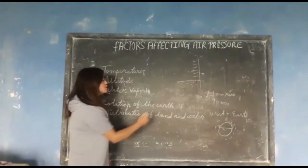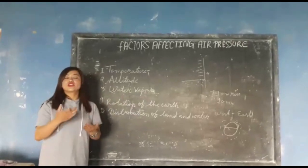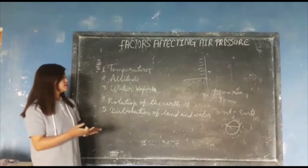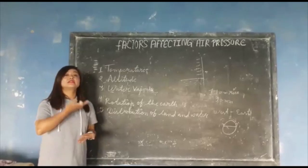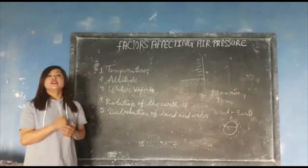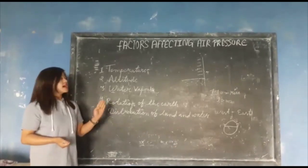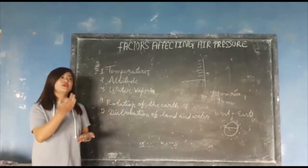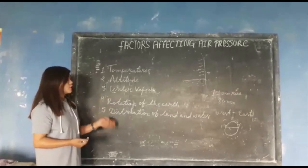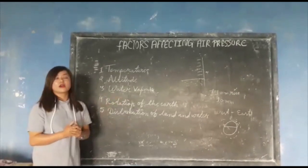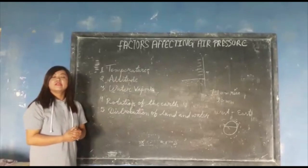The last factor is distribution of land and water. Air pressure is not the same on land and water lying on the same latitude, because land gets heated up quickly and cools down quickly, but water gets heated up slowly and cools down slowly. Therefore, during summer, there would be low pressure on the land and high pressure on the sea. But during winter, the opposite situation takes place — there would be high pressure on the land and low pressure on the sea.